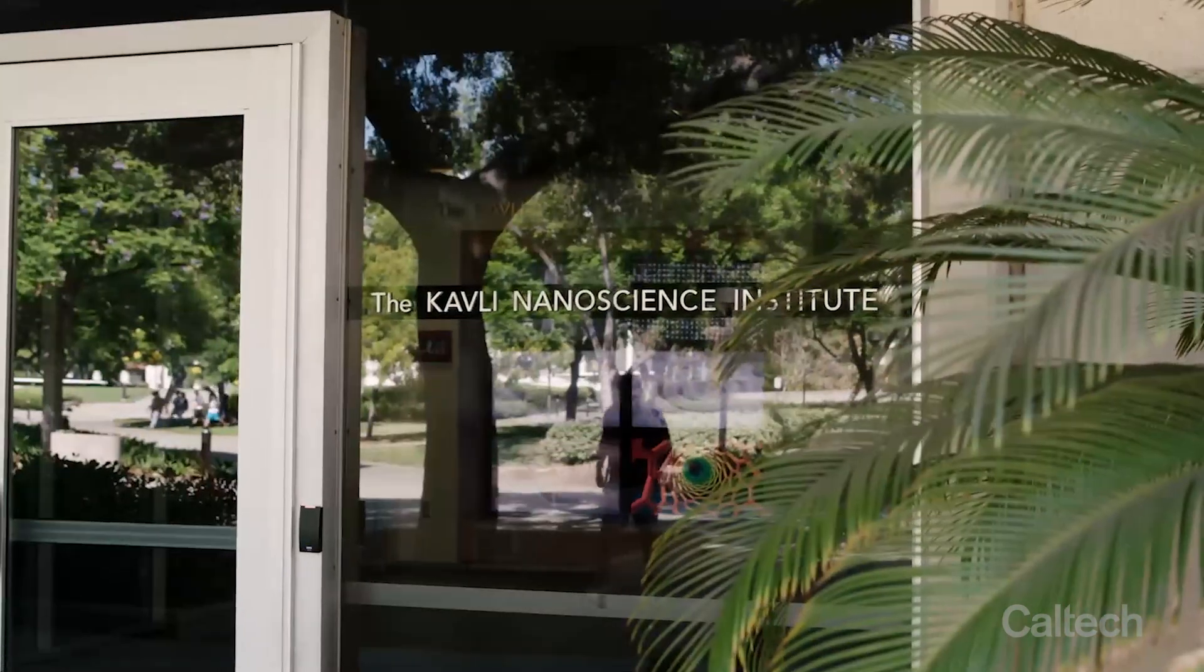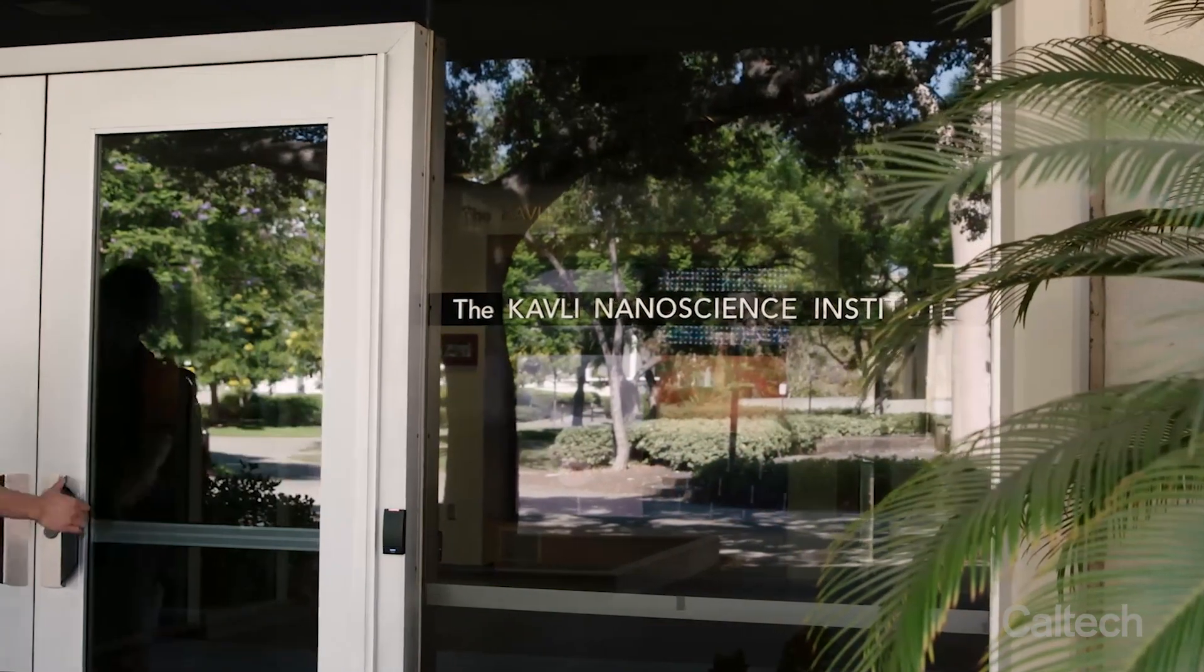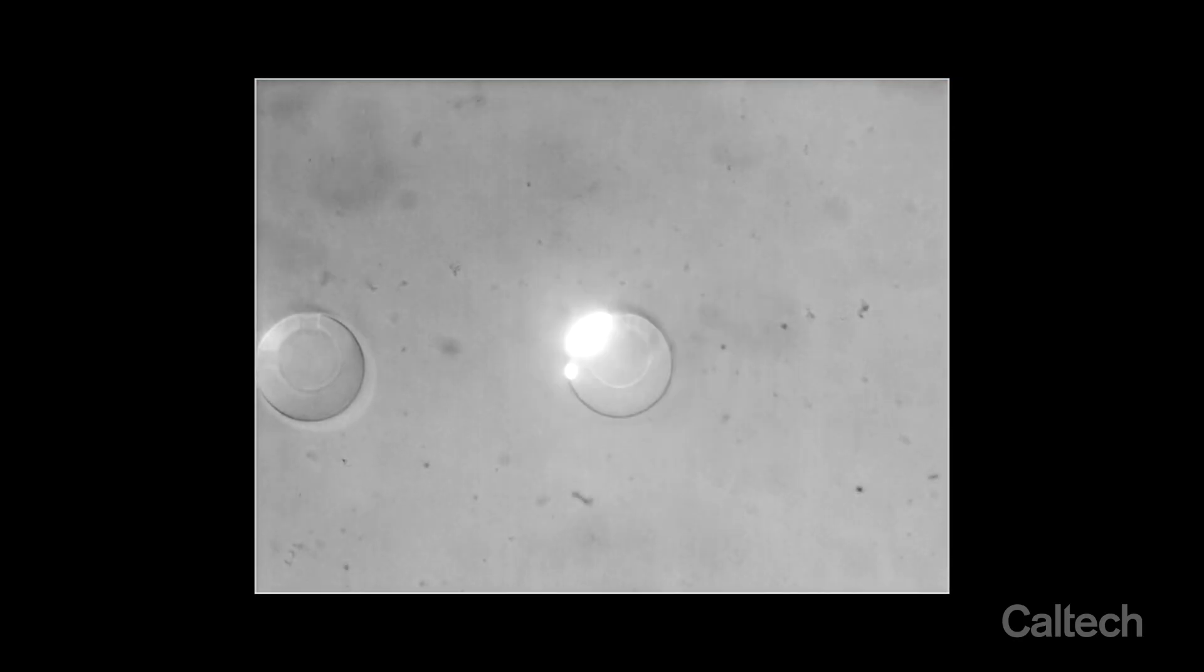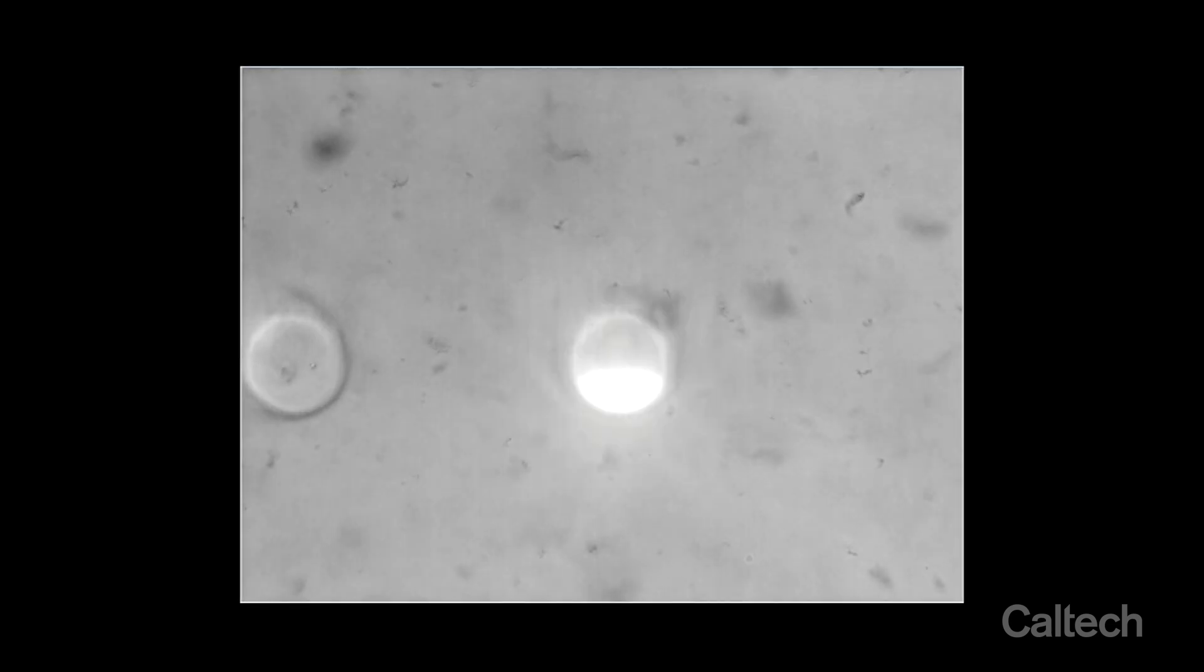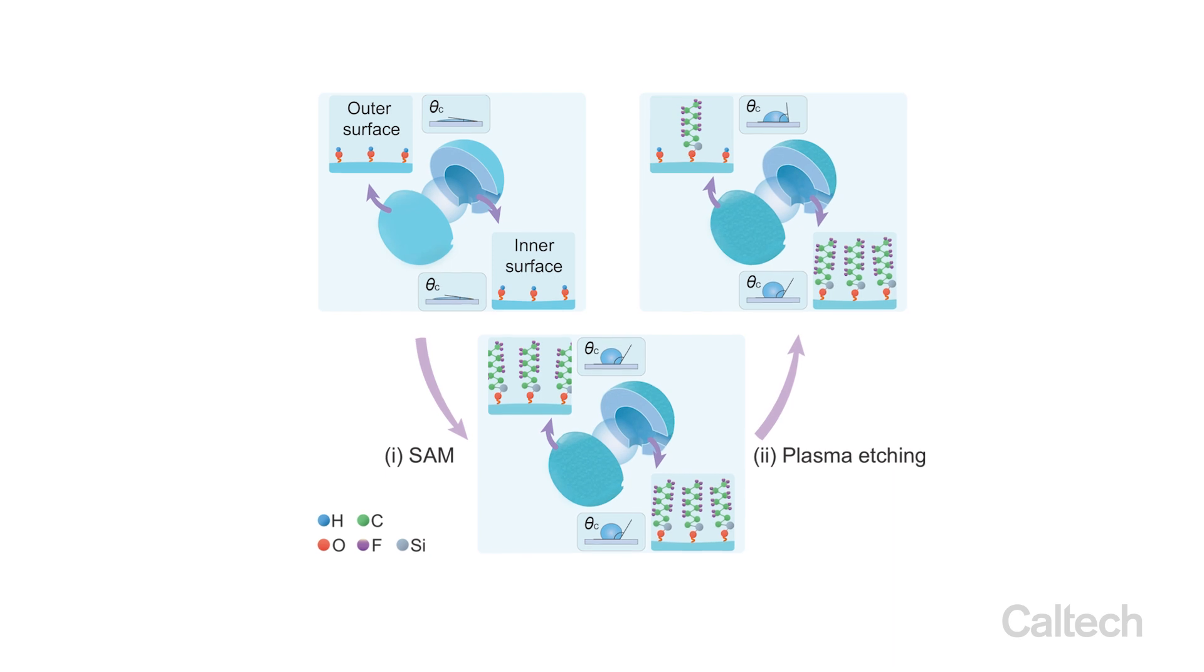Caltech is fortunate to have advanced micro nanofabrication facilities at the Kavali Nanoscience Institute. We can 3D print this micro robot using two-photon polymerization. It's essentially a hollow structure that can trap a micro bubble inside.